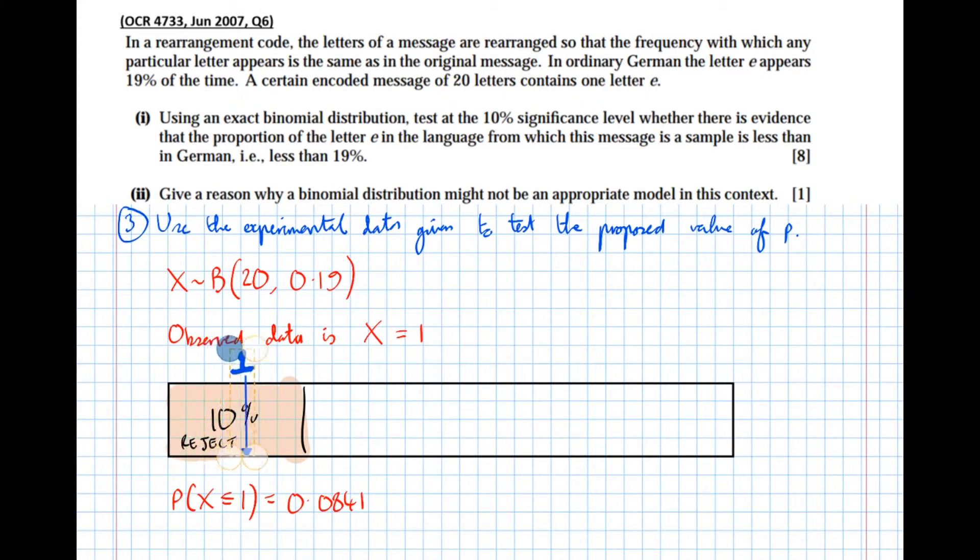If 0.0841 of the probability lies to the left, this is the 10 percent region so 0.0841 is less than 10 percent. So 0.0841 of the probability lies to the left of one, therefore it's around about there on the scale in the rejection region, so we are going to reject.